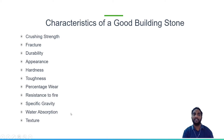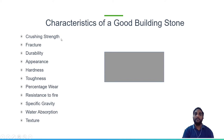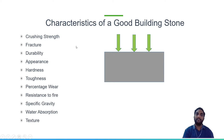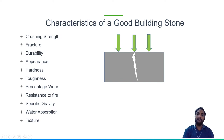Crushing strength or compressive strength is the load a stone can bear. For a good stone, it should be greater than 100 N/mm² (100 MPa). Generally, a good building stone is rated from 60 to 200 N/mm² as good crushing strength. If there is a fracture along an uneven plane that was not expected, it will be difficult to use as a building stone. Limestone or sandstone cannot be used for wall construction because they break easily.